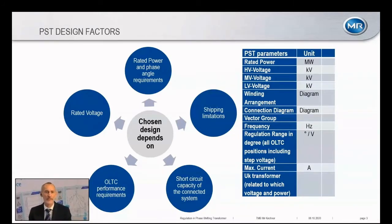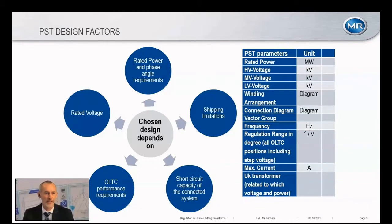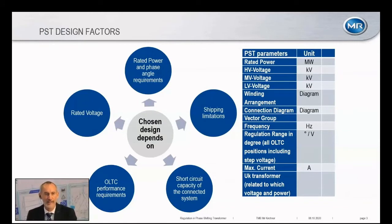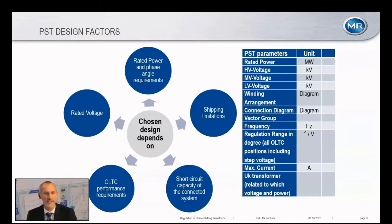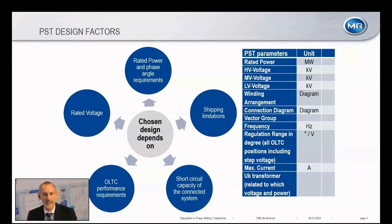When thinking about phase shifting transformers, we start with rated power — not different from any other transformer. But then comes the phase angle: we're talking about an angle in degrees and how many steps are needed to realize a certain angle, which is different from normal transformers. Rated voltage of the system line is important, and in many cases PSTs are very large equipment that must be shipped worldwide. Shipping limitations — especially when leaving waterways for railway or road transport — can cause significant problems that must be considered.